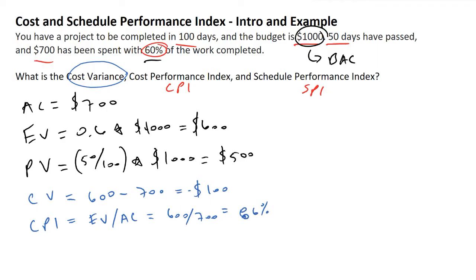So what that's telling us in decimal format is 0.86. Because this is less than 1, this means that the money is not being spent as effectively as what we've been budgeted for. So for each dollar that we're supposed to be getting out of a project, we're getting slightly less than that.